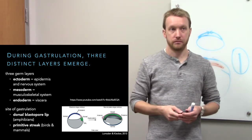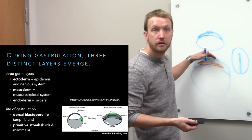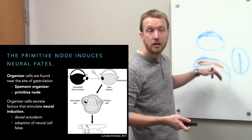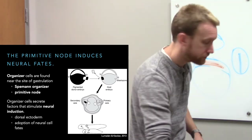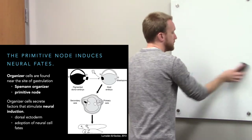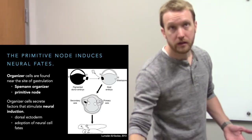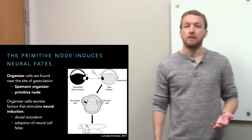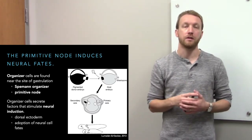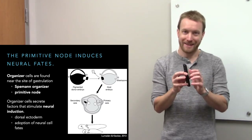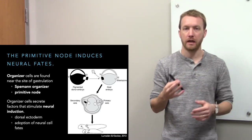Once we have our three germ layers, we need to determine which part of the ectoderm will become nervous tissue. This is determined by organizer cells. Organizers create body axes and tell surrounding cells what to become. They're a dynamic structure — cells move in and out. In amphibians it's the Spemann organizer; in birds and mammals with a disc embryo, it's the primitive node. These cells spit out diffusible factors, creating concentration gradients that tell tissues where they are.